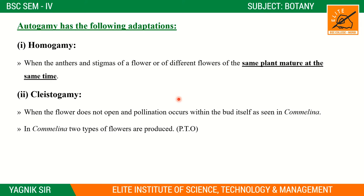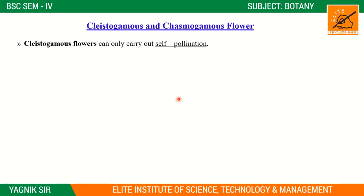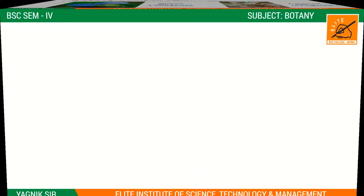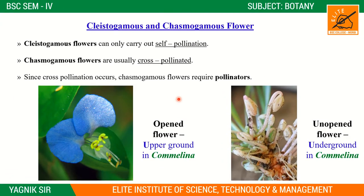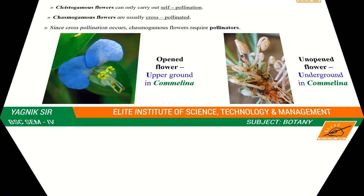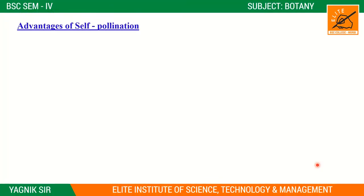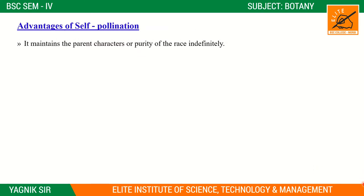Both types of pollination occur in Commelina. The plant has open flowers on the surface and underground flowers. The open flowers undergo chasmogamy and the underground flowers undergo cleistogamy.